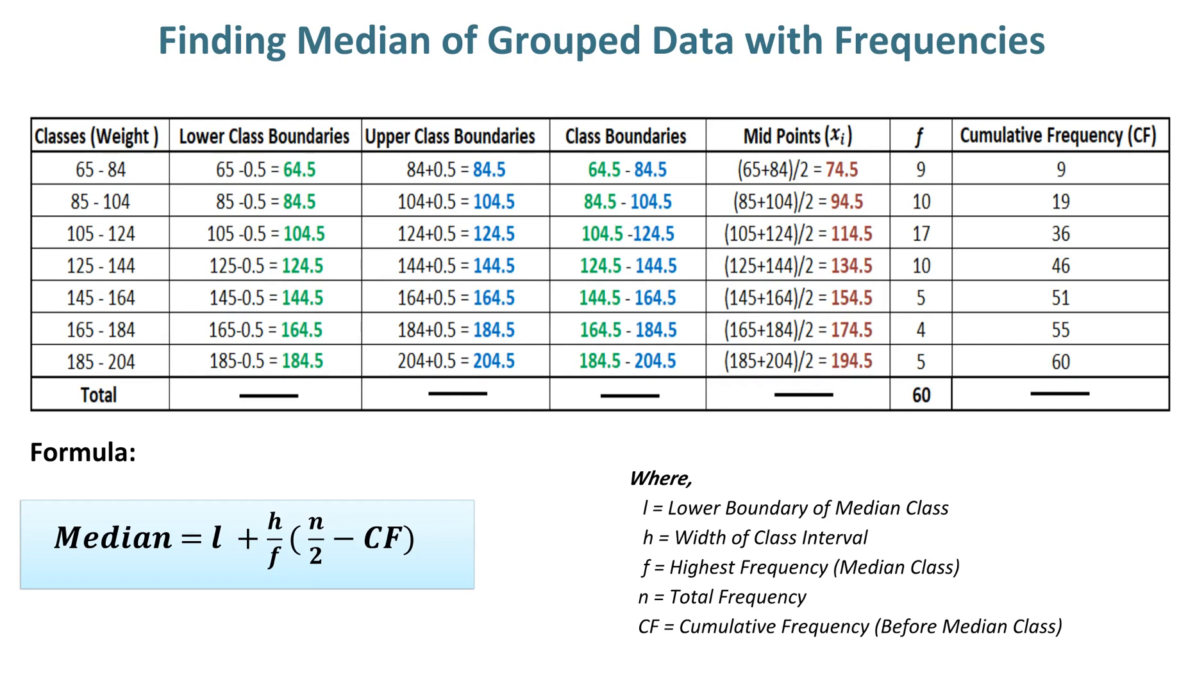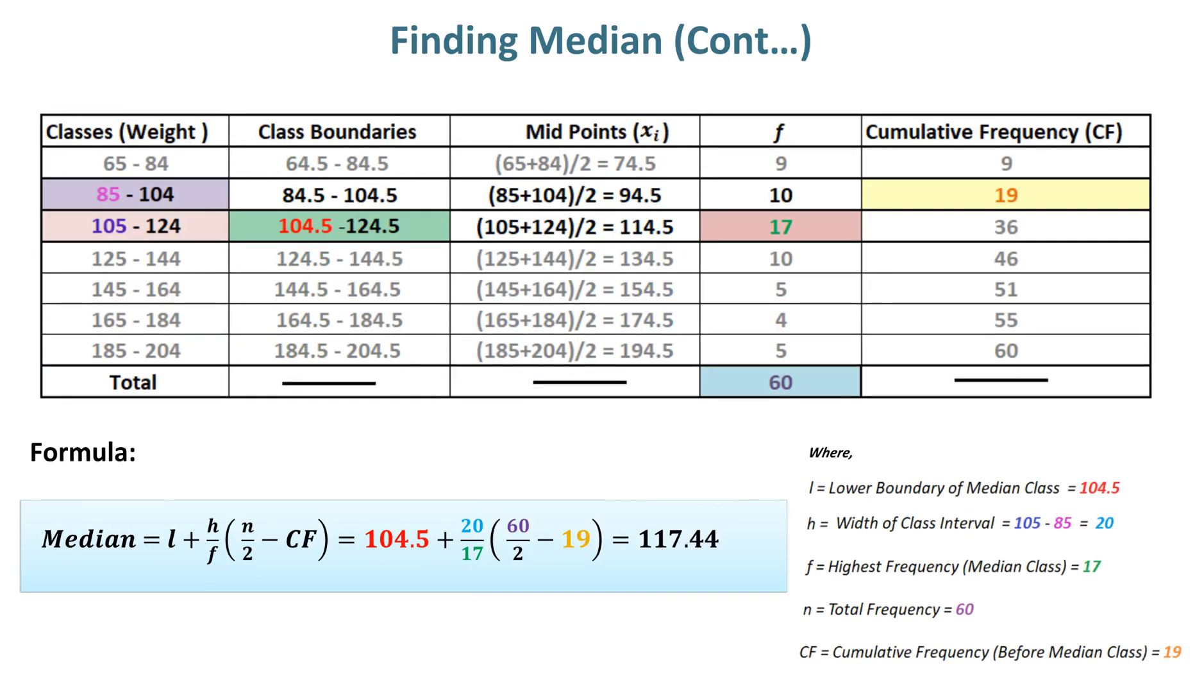F is the highest frequency (median class), N is the total frequency, and CF is the cumulative frequency before the median class. After putting all required values in the median formula, we get a median value of 117.44.